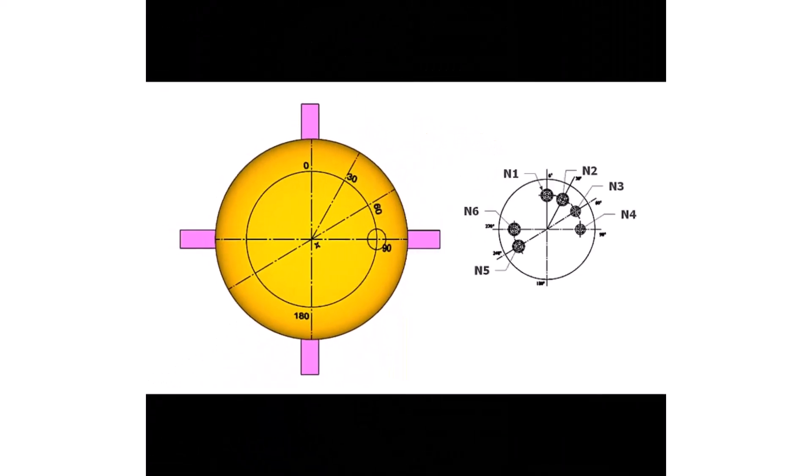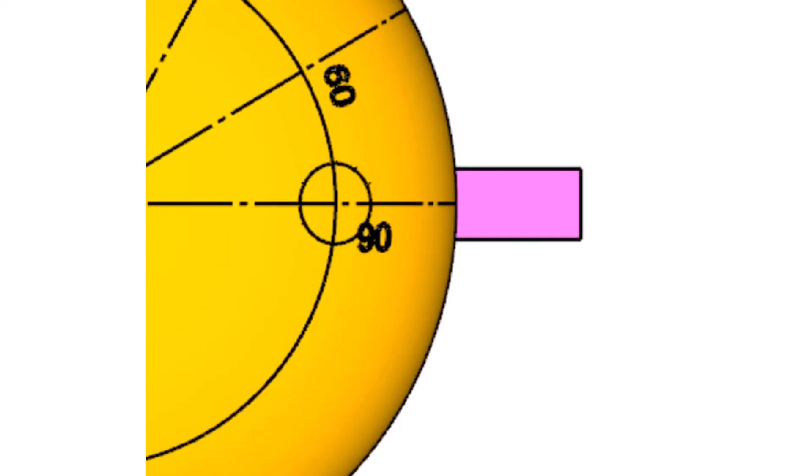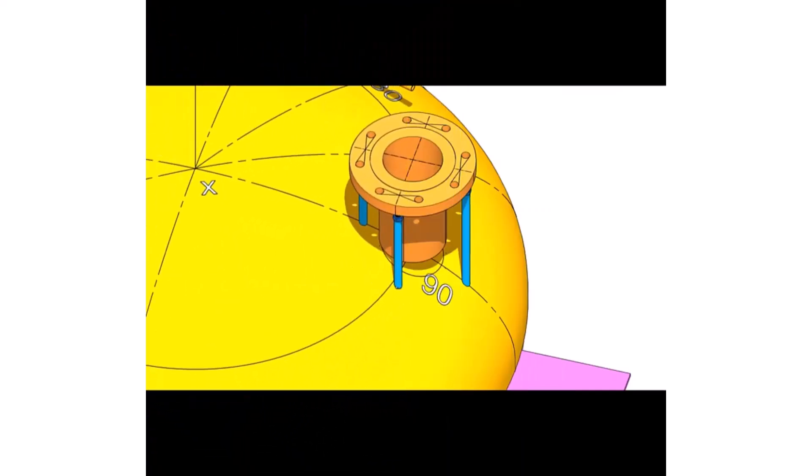Let us mark the opening for nozzle number four. Draw a circle, four to five millimeters more than the diameter of the nozzle. This circle is only for reference. Tack weld four numbers jack bolts, 90 degrees apart outside the circle, but inside the flange outer diameter.